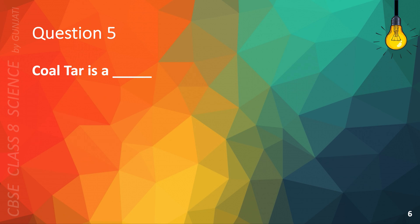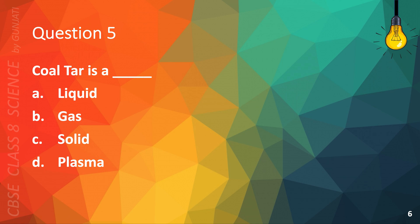Question 5. Coal tar is A. Liquid, B. Gas, C. Solid, or D. Plasma?